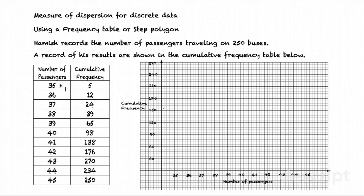35 passengers on the bus happened 5 times. So at 35, I want to go up to 5. That's quite challenging here because one of my small squares is 6. So I'm just going to go up to there. Be as accurate as you can on these scales. Now, with a step polygon, I now go along horizontally to the next point that I want to plot. At 36, I go up to 12.